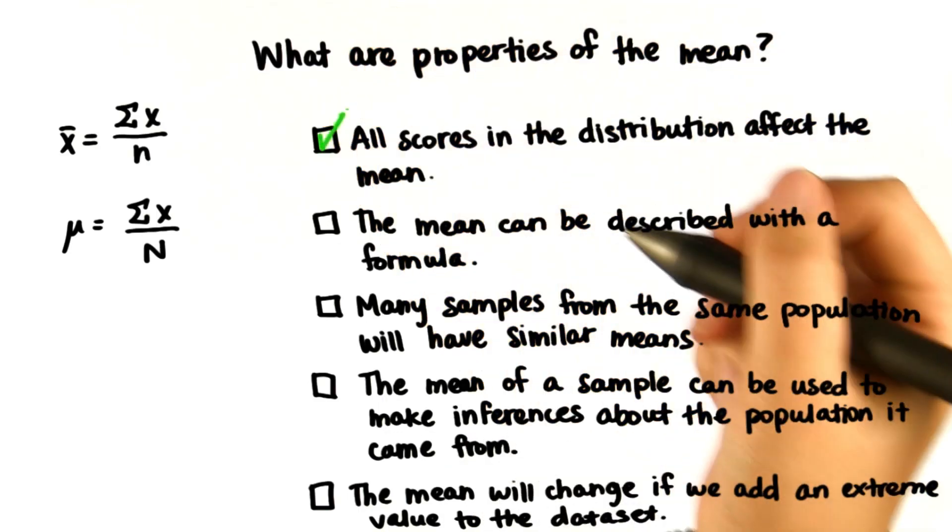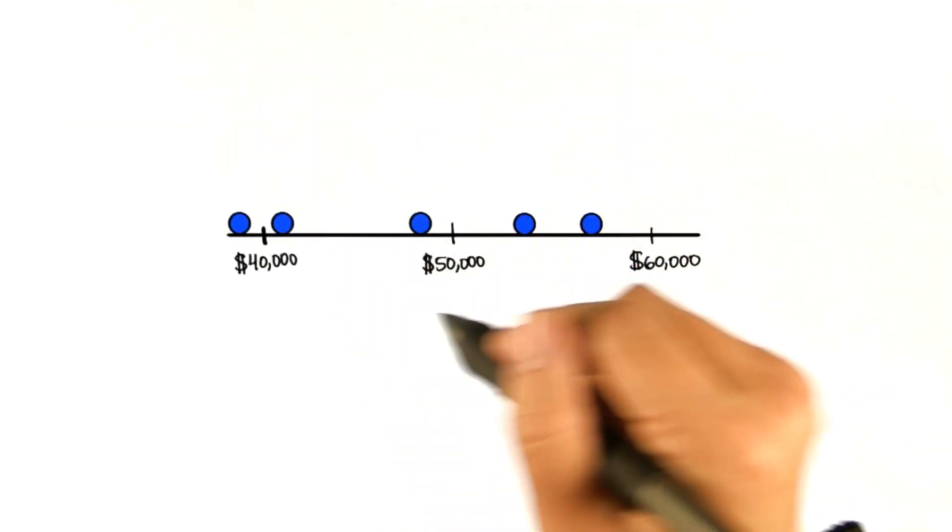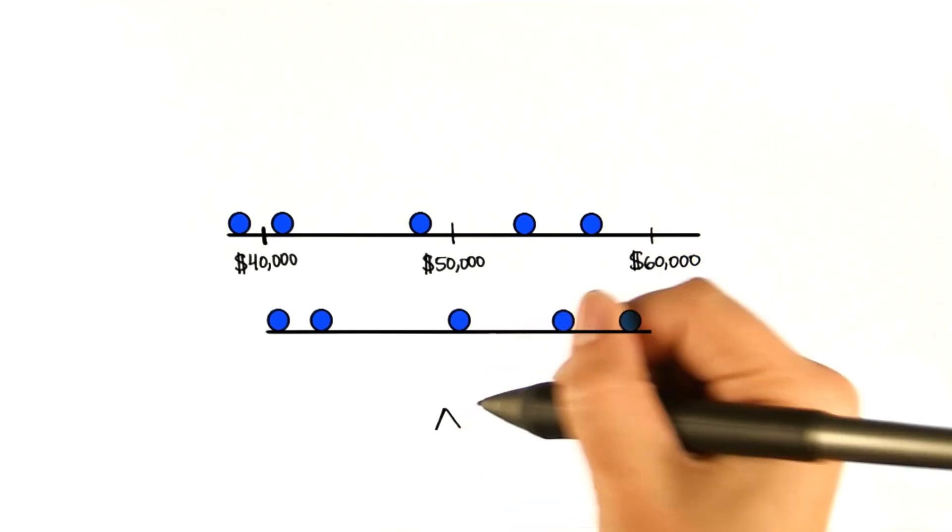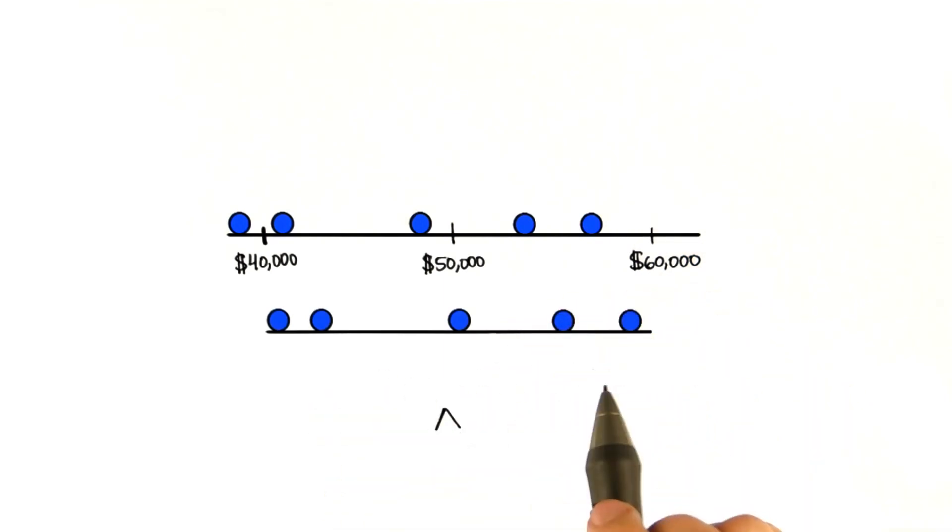All scores in the distribution affect the mean. Think of the mean like a teeter-totter. Where should the pivot go so that it balances?